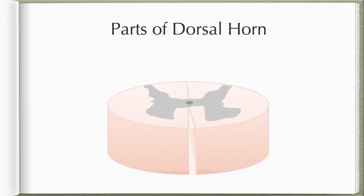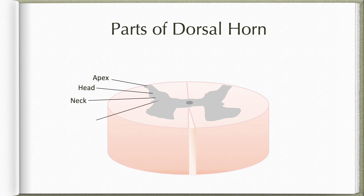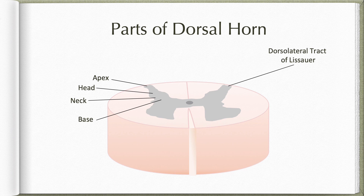The dorsal horn is also described as having different parts from dorsal to ventral aspect: they are apex, head, neck and a base. The apex is separated from the surface by a thin sheet of white matter called the dorsolateral tract of Lissauer. The dorsal root fibers when they reach the spinal cord ascend up or descend down for a few segments in this dorsolateral tract of Lissauer before they enter the spinal cord grey matter and end by synapsing with one of the neurons there.